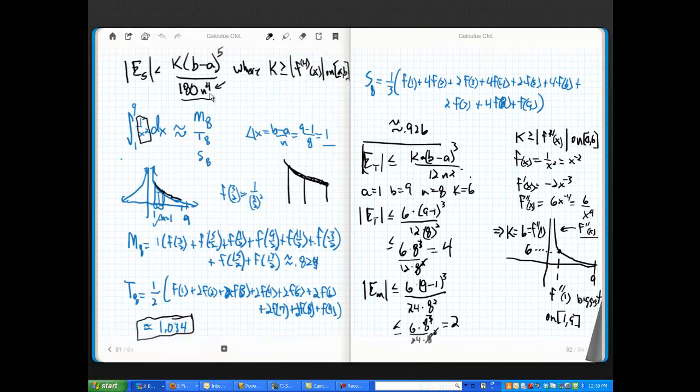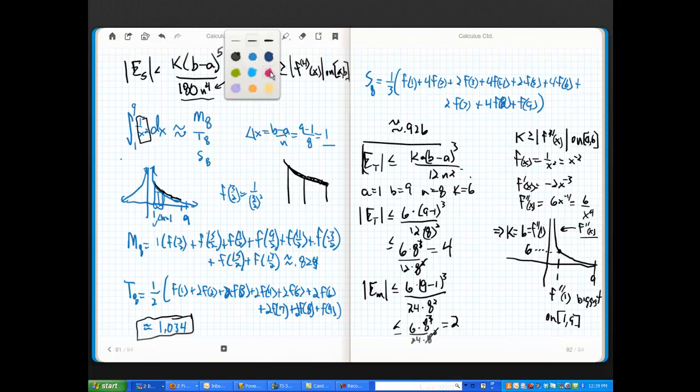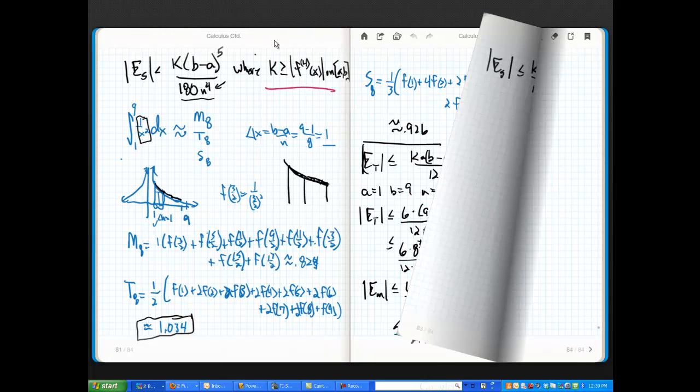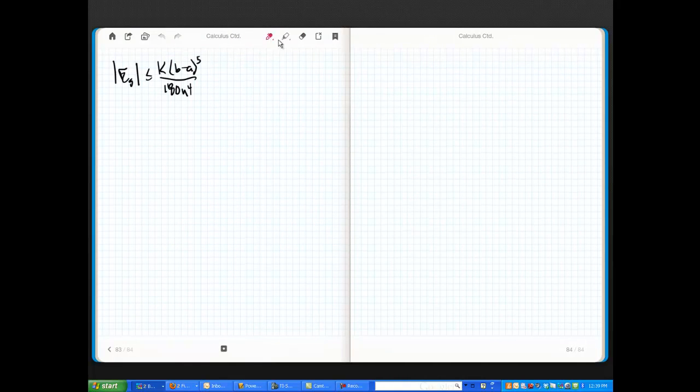If I stumble back this way, I can double check. Remember, we got this guy. Now, here's the nasty part. Let's change colors. Here's the nasty part. I've got to take two more derivatives. Well, I'm not afraid. If F double primed of X was six over X to the fourth, let's stumble over here and take a couple more derivatives.